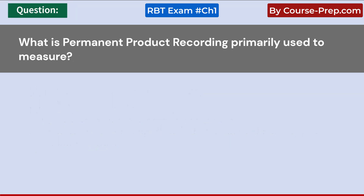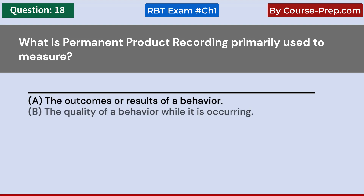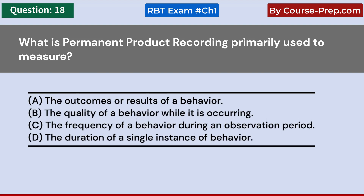What is permanent product recording primarily used to measure? A. The outcomes or results of a behavior. B. The quality of a behavior while it is occurring. C. The frequency of a behavior during an observation period. D. The duration of a single instance of behavior. Answer A: The outcomes or results of a behavior.